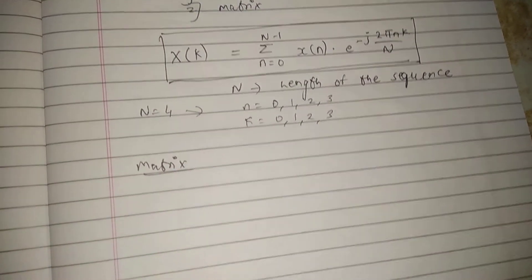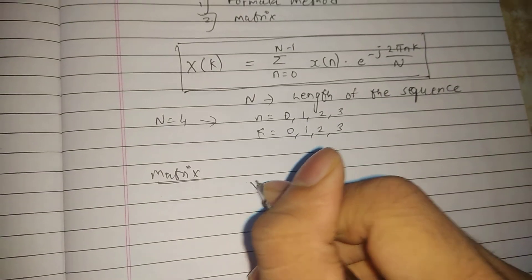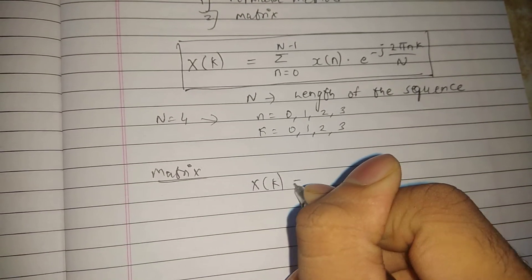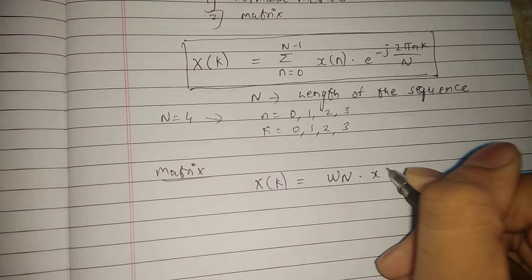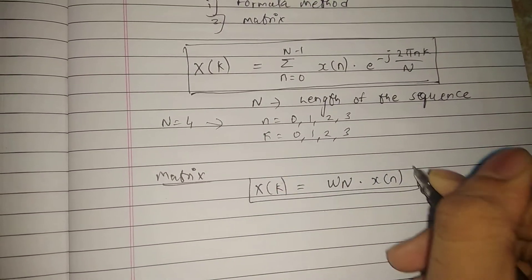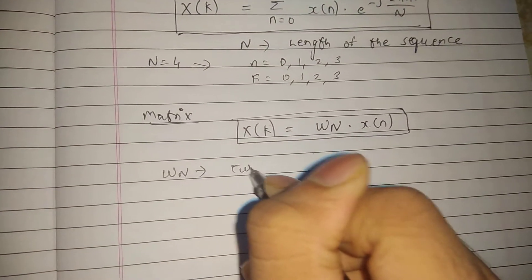The matrix method formula is: x(k) equals ωN times x(n). In this, ωN is called the twiddle factor.